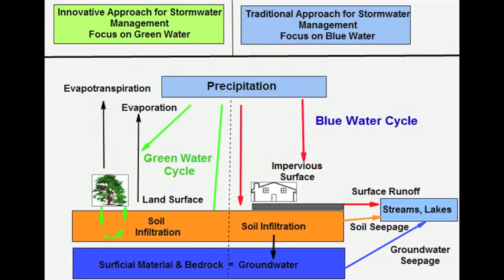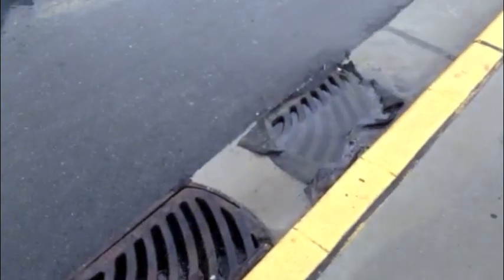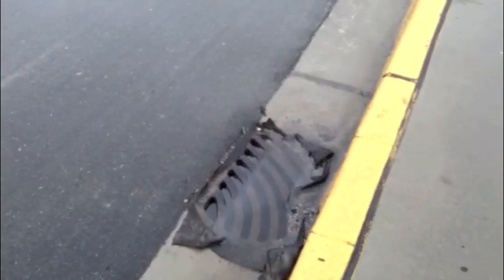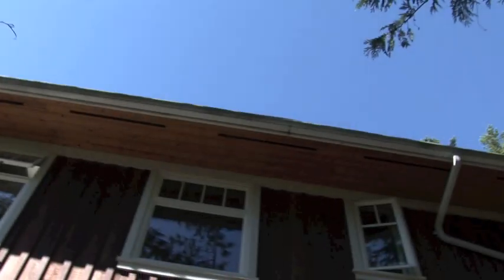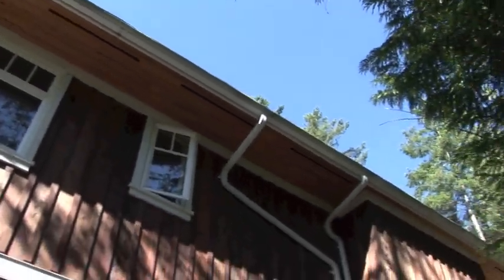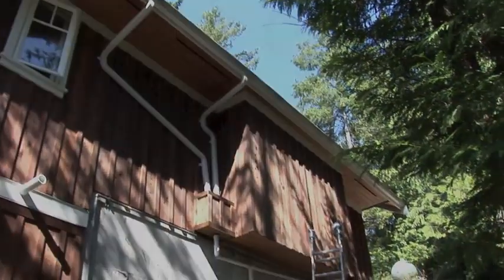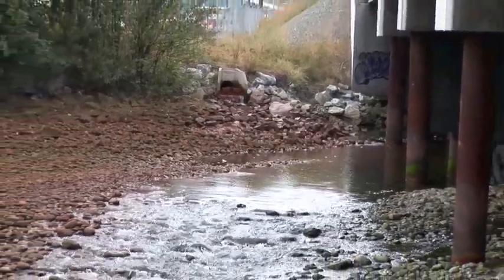Traditionally, stormwater management focuses on blue water — the water that we can see at the surface and convey away from buildings to a river, lake, or the ocean. Stormwater runoff is directed from gutters and drains to underground pipes, which in turn leads to a body of water.